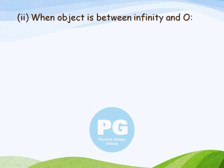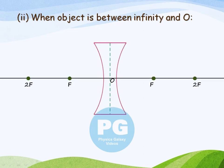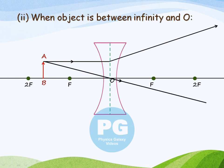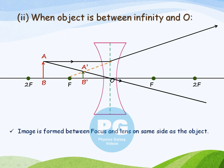Second case: when the object is placed between infinity and optical center. Here is our extended object AB. A ray of light from point A goes parallel to the principal axis, and it actually becomes diverging after refraction from the lens. The second ray of light which goes through the optical center passes undeviated after refraction from the lens. These two rays of light appear to meet at a point, which will be the virtual image of point A. We join this point from the principal axis to get a virtual image of object AB as A'B'. So the image is formed between focus and lens, on the same side as the object. The image is virtual and erect, and it is diminished — that is, smaller than the object.